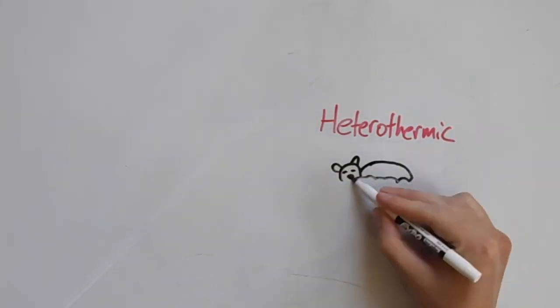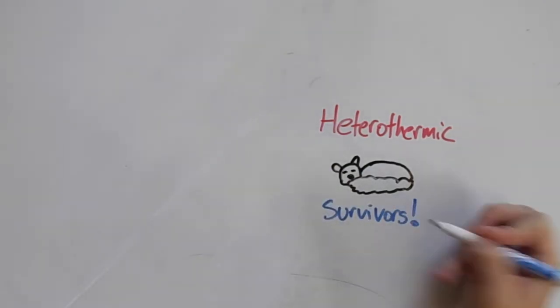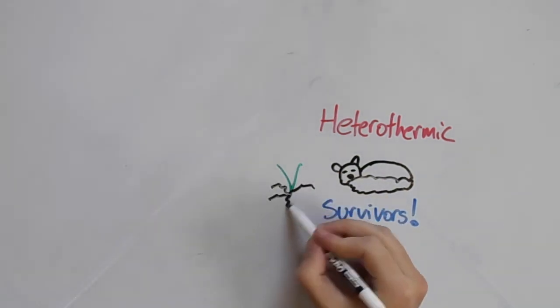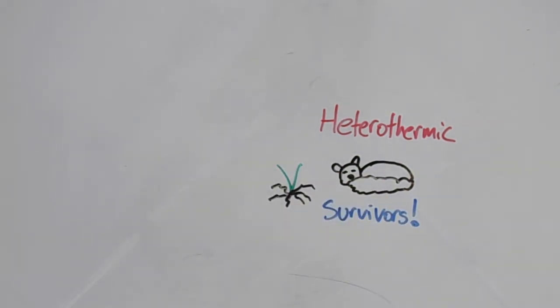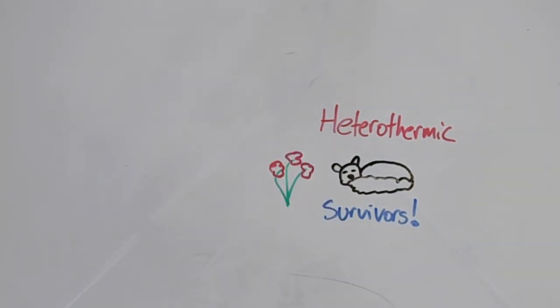Interestingly, studies have shown that heterothermic animals, like the ones we've been talking about, may actually survive better as the global climate changes over the coming decades. Given their ability to go into torpor, heterothermic animals are able to more easily avoid conditions where food isn't as abundant by simply sleeping it off. Then they can reawaken when conditions are better, having used only a little bit of energy, and reap the harvest.